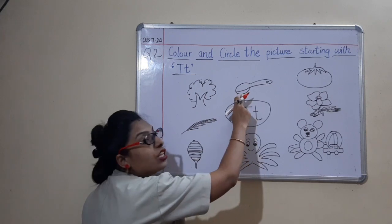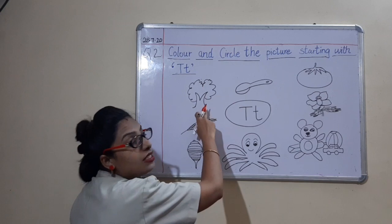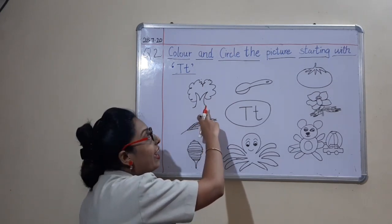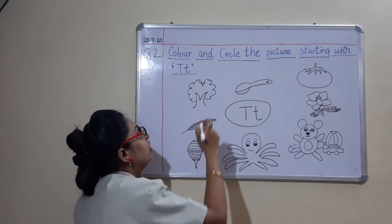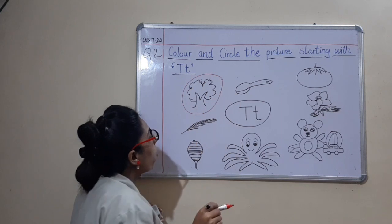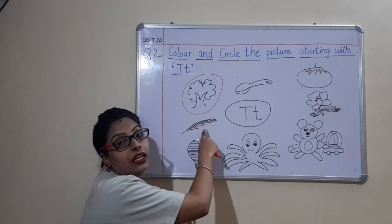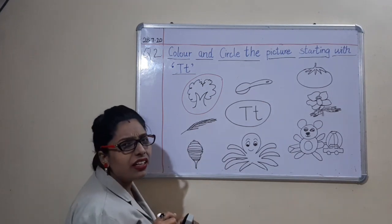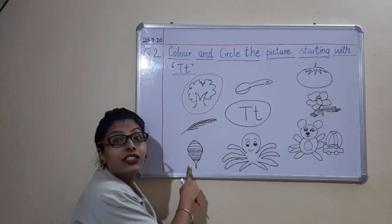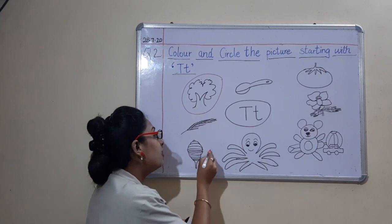S — spoon. Sound of letter T? No. T — tree. Yes, sound of letter T — so we will circle it. Quill. Sound of letter T? No. T — door. Sound of letter T? Yes — so we will circle it. O — octopus. Sound of letter T? No.